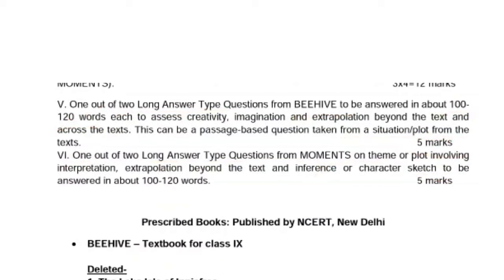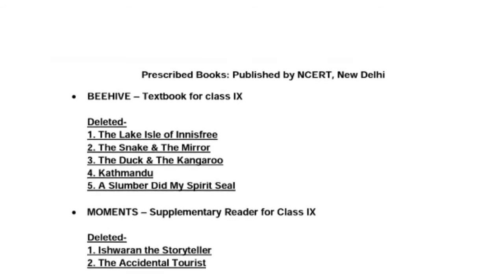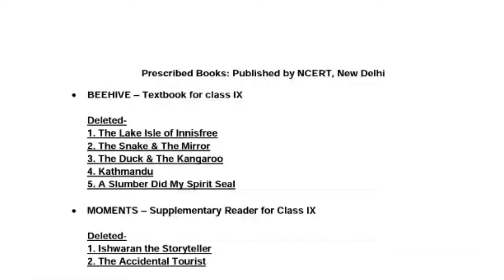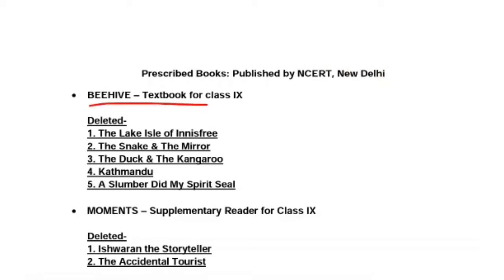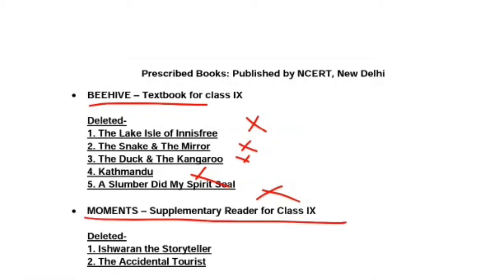So the total marks from literature will be 40 marks. Now let's see which chapters have been deleted from your textbooks. From Beehive, the deleted chapters are: 'The Road Not Taken' (a poem), 'The Snake and the Mirror' (a chapter), 'The Duck and the Kangaroo' (a poem), 'Kathmandu' (a chapter), and 'A Slumber Did My Spirit Seal' (a poem). From Moments, two chapters have been removed: 'Iswaran the Storyteller' and 'The Accidental Tourist.'